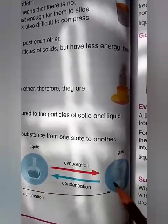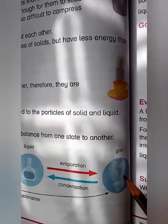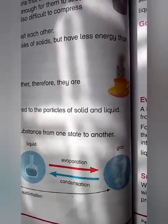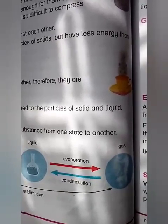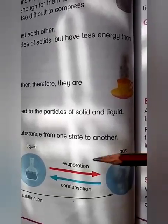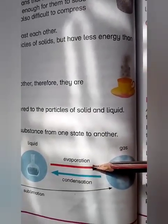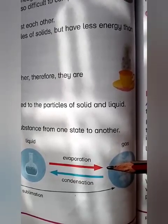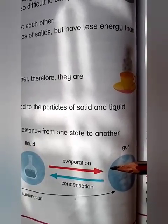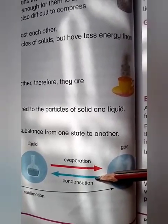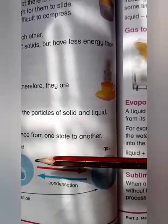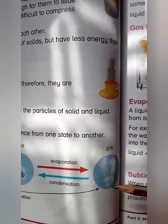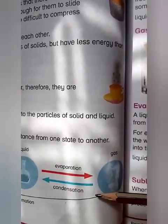Now see the process between liquid and gas. Let's take an example of a pan of water. If we put a pan of water on the stove, the water becomes hot and some vapors start rising from the pan. This process is known as evaporation. And if we cover that pan for some time, you can see some drops of water on the cover of the pan — that is the process of condensation. So when water changes into vapors, this is evaporation, and when vapors convert back into liquid, that is condensation.